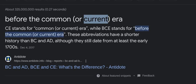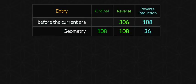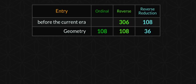BCE means 'before the common or current era.' Look how amazing this is — 'before the current era' gives 306 and 108, and in geometry you see the 36. Drop that zero and you get 36; drop all the zeros and you get 18 and 36 — double 18, 36. Incredible.